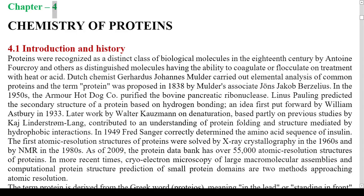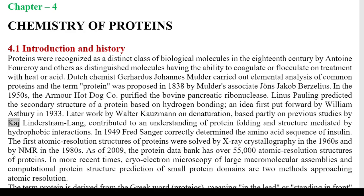4.1 Introduction and History. Proteins were recognized as a distinct class of biological molecules in the 18th century by Antoine Forcroy and others, as distinguished molecules having the ability to coagulate or flocculate on treatment with heat or acid. Dutch chemist Gerhardus Johannes Mulder carried out elemental analysis of common proteins, and the term protein was proposed in 1838 by Mulder's associate Jacob Berzelius. Linus Pauling predicted the secondary structure of a protein based on hydrogen bonding, an idea first put forward by William Astbury in 1933. Later work by Walter Kausmann on denaturation contributed to an understanding of protein folding and structure.